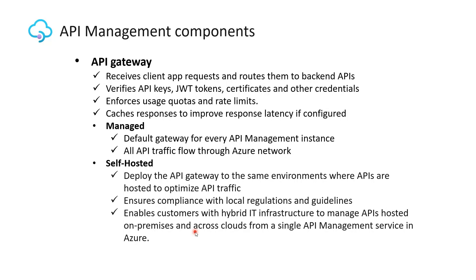Azure API Management is made up of an API gateway, a management plane, and a developer portal. The API gateway receives all requests from client applications and forwards them to respective backend services. It verifies API keys, JWT tokens, certificates, and other credentials, enforces usage quotas and rate limits, and caches responses to improve latency if configured.